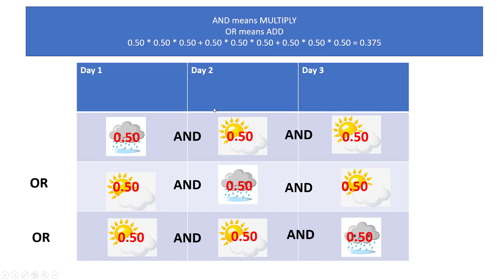In probability, the word AND means to multiply — remember that. AND means to multiply, OR means to add. So notice what I did: this line here is the first group, and everywhere I see AND I'm multiplying. Everywhere I see an OR, I put a plus sign. Then the next group, and the next group, and I get my final answer.